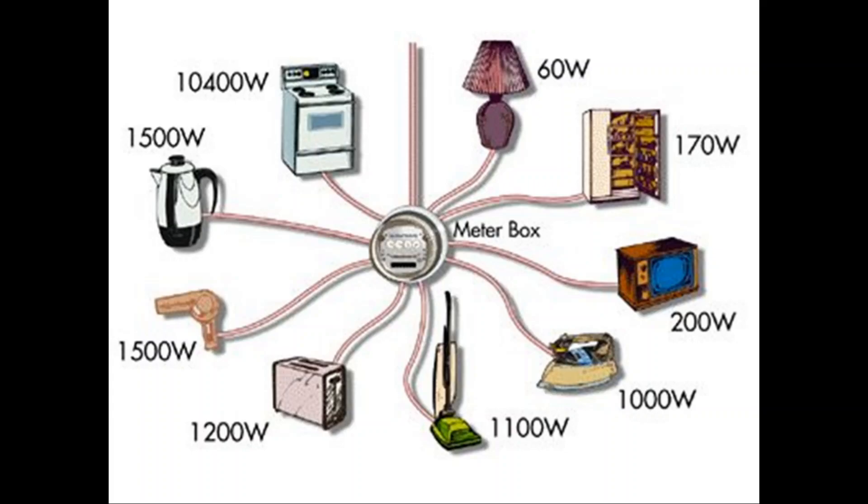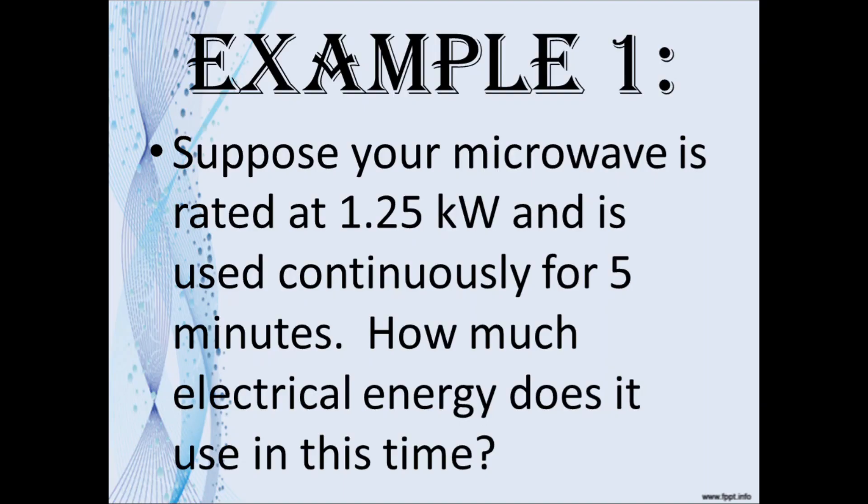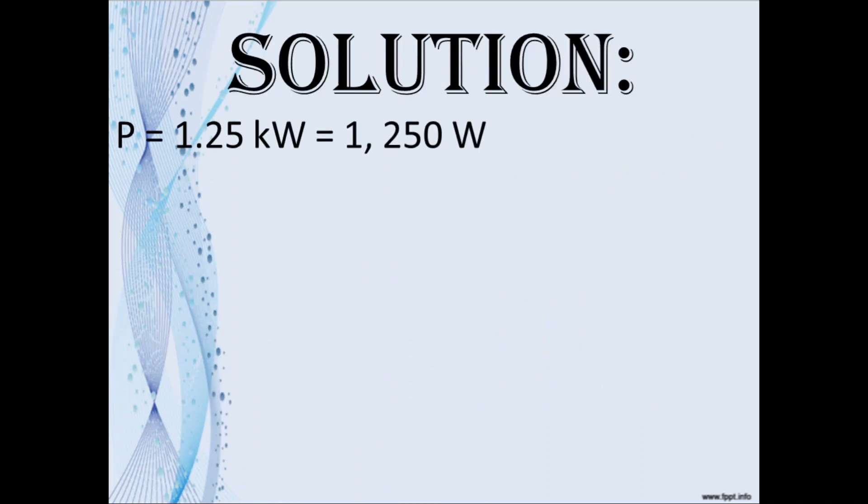So our first example: suppose your microwave is rated at 1.25 kilowatts and is used continuously for five minutes. How much electrical energy does it use in this time? So we know the power is 1.25 kilowatts, which must be converted to watts. That would be 1,250 watts. And the time is five minutes, which we must convert to seconds by multiplying by 60.